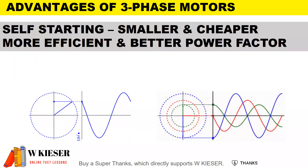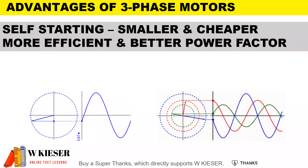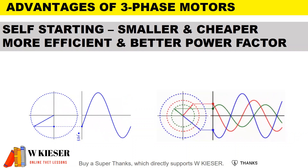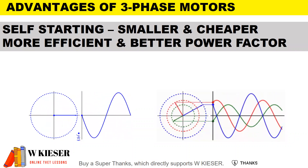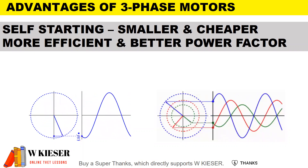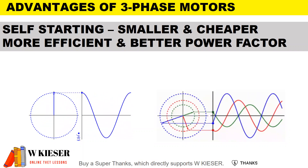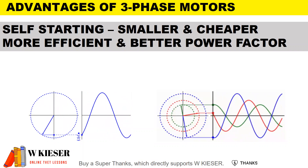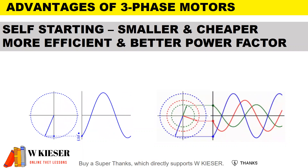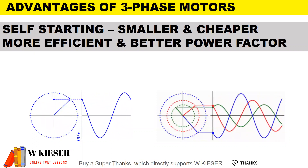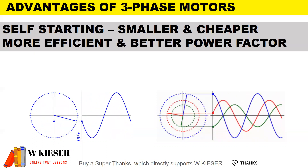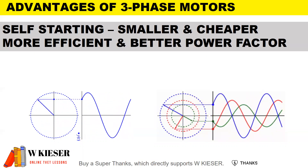Before we look at the three single phase AC motors, I first want to illustrate the advantages of three phase motors when compared to single phase motors. The biggest advantage of three phase motors is that they are self-starting. As you can see in the illustrations on screen, three phase motors have three phases that are 120 degrees apart, so when current is applied at start, the motor automatically starts.